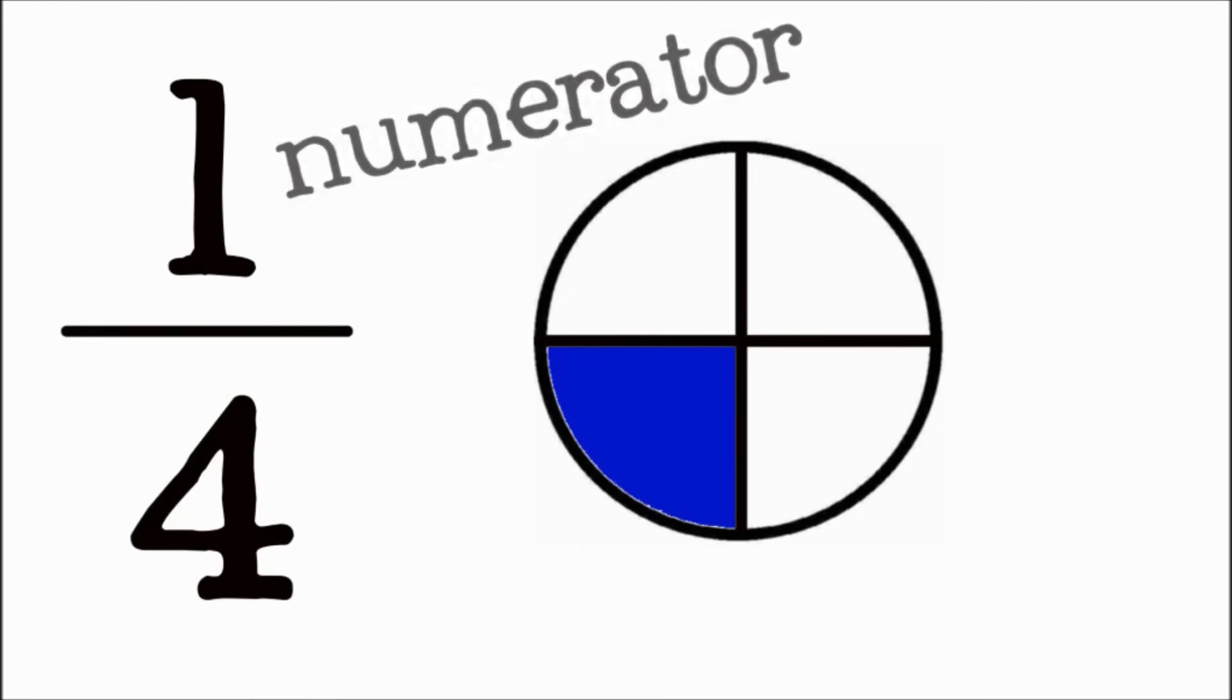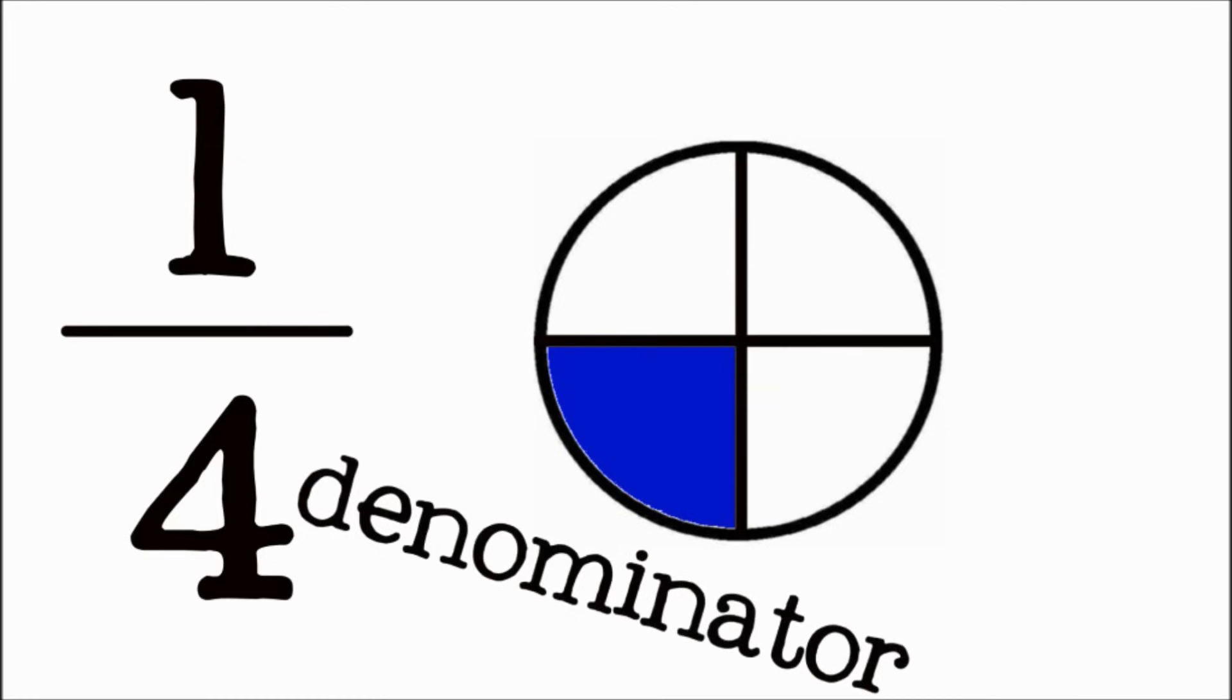The top number, or numerator, tells us how many parts we are talking about. The bottom number, or denominator, tells us how many parts there are all together.